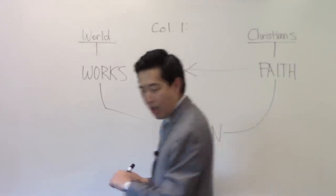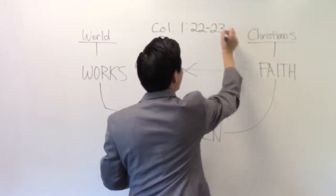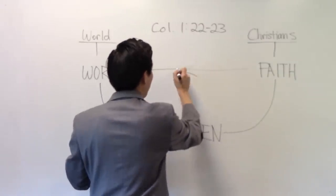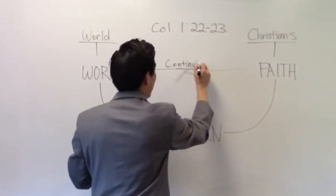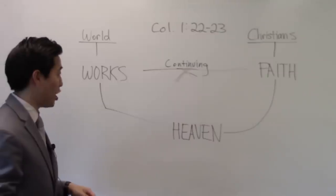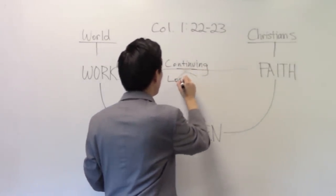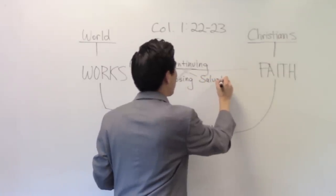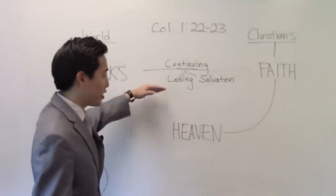So notice right here that in verses 22 through 23, it really seems to show that these things go together. It's continuing. If you get out of faith, then you lose your salvation. Thus, lose salvation. So we believe in losing salvation. And no, we don't. Okay, don't say amen to that. So here's the thing. We fully deny this. We believe once saved, always saved.